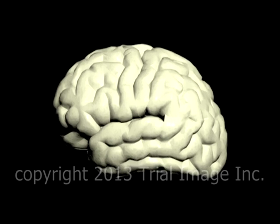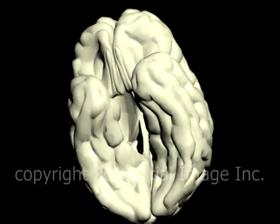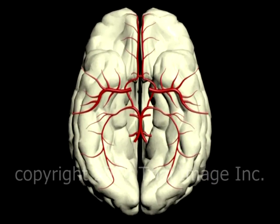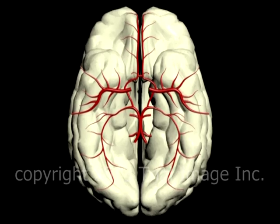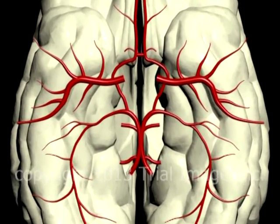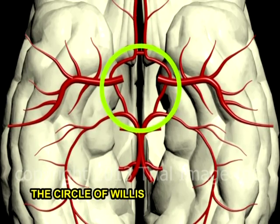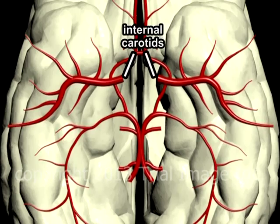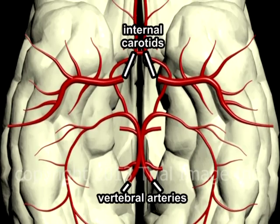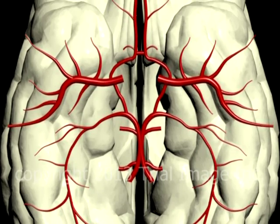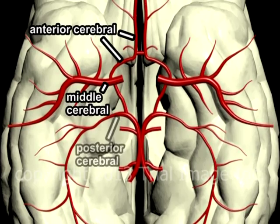The Circle of Willis is best seen by examining the underside of the brain. It is a beautiful piece of anatomy and represents a central hub from which radiates the entire blood flow to the brain. Inflow is primarily via the internal carotids and vertebral arteries. Outflow of blood from the Circle occurs via anterior, middle, and posterior cerebral arteries, each with left and right branches on either side of the circle.